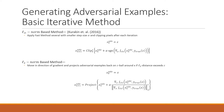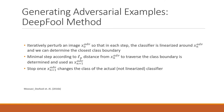The DeepFool method: the authors essentially took the work of Moosavi-Dezfooli et al. and applied it to their paper. The basic idea is to iteratively perturb an image; at each step the classifier is linearized around that image to determine the closest class boundary. The minimal step according to the LP distance from the image to traverse the class boundary is determined and used as the next adversarial example. The algorithm stops when the next adversarial example changes the class of the actual classifier.